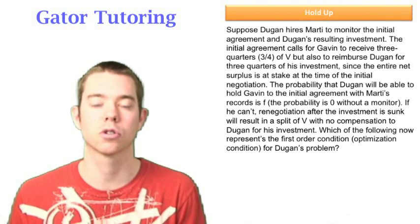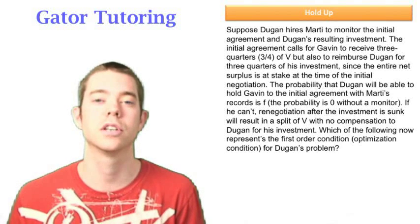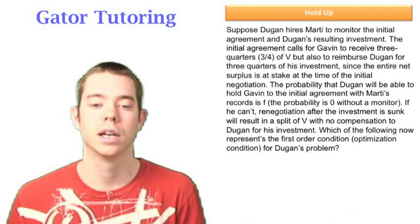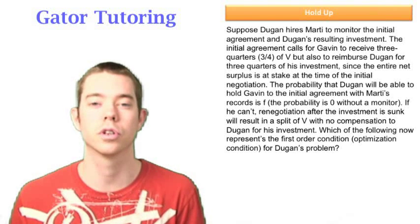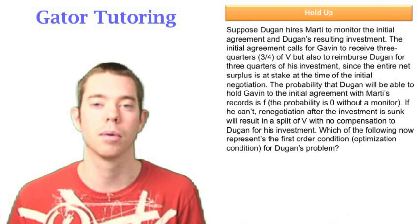So this time he didn't give us an actual probability, he just defined it as f. He left it in notation form. And we see our answer choices, we're going to be leaving this in notation. It says, which of the following now represents the first order condition, the optimization condition for Dugan's problem. So when you see first order condition, that just means write Dugan's problem out, take the derivative, set it equal to zero, that'll give you your first order condition.